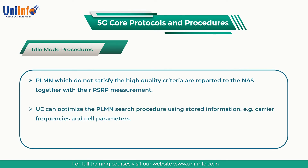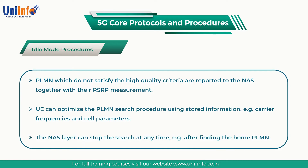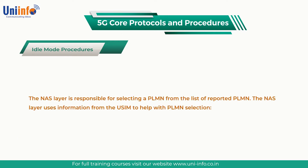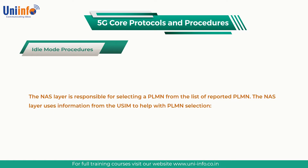The UE can optimize the PLMN search procedure using stored information, e.g., carrier frequencies and cell parameters. The NAS layer can stop the search at any time, e.g., after finding the home PLMN. The NAS layer is responsible for selecting a PLMN from the list of reported PLMNs. The NAS layer uses information from the USIM to help with PLMN selection.